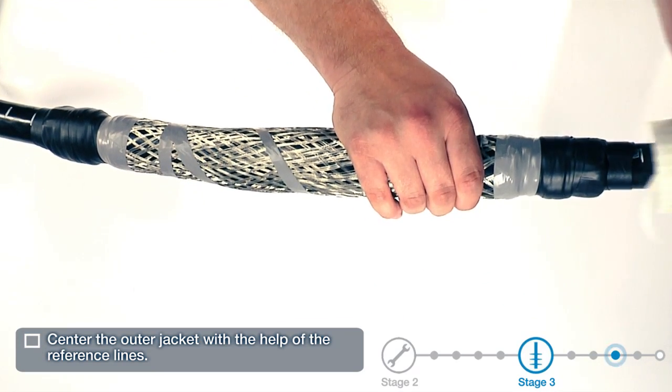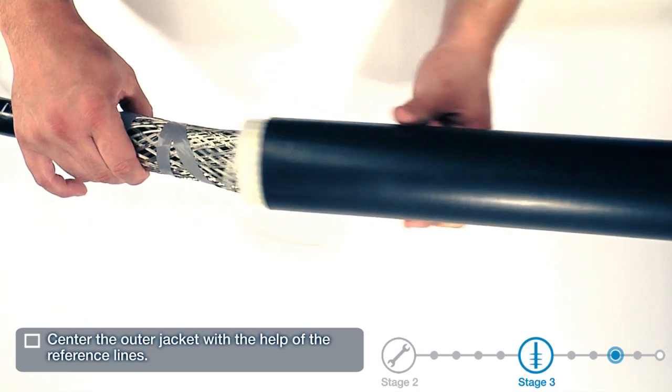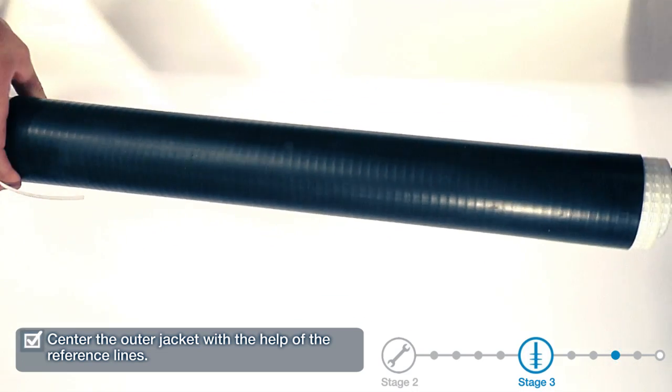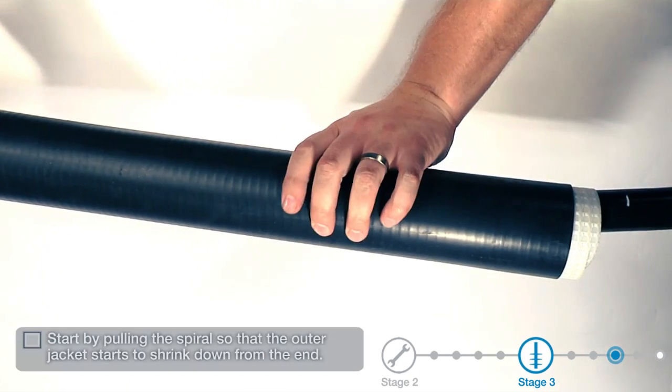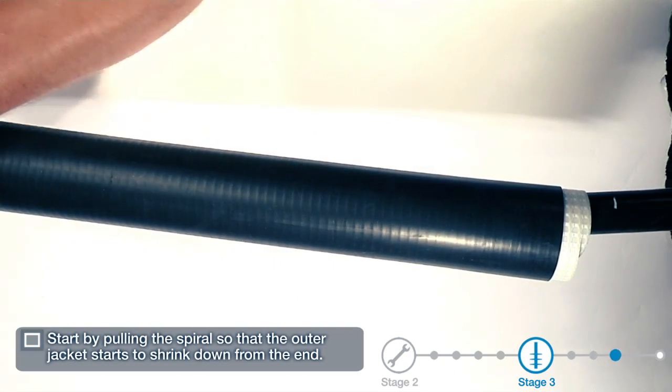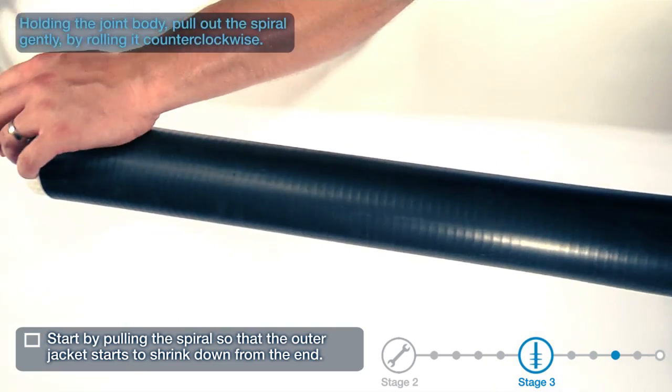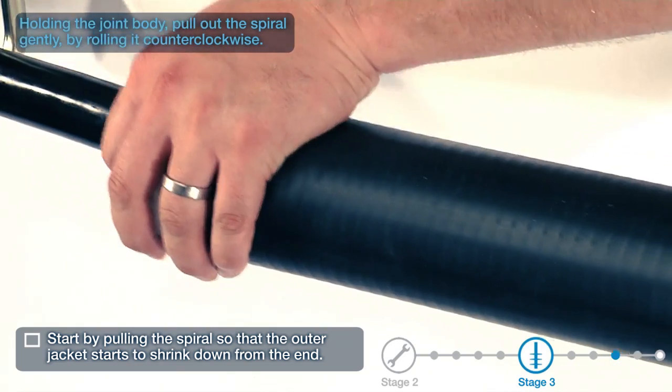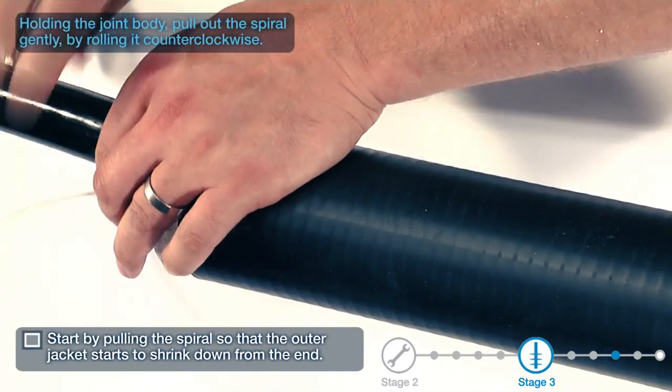Center the outer jacket with the help of the reference lines. Start by pulling the spiral so that the outer jacket starts to shrink down from the end. Holding the joint body, pull out the spiral gently by rolling it counterclockwise.